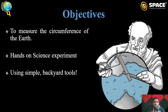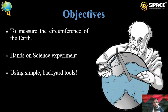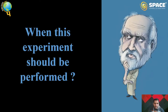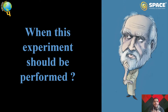The objective of today's session is to measure the circumference of Earth. We are going to do this by performing a hands-on science experiment using simple backyard tools — a simple normal stick, paper, scale, and things like that. This experiment can be performed on any day, but the benefit of performing it on a particular day is that we know the exact position of the sun.